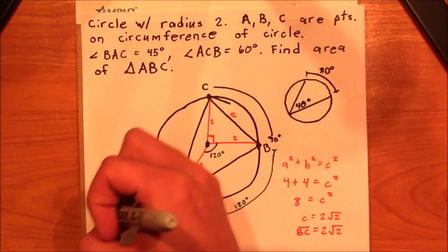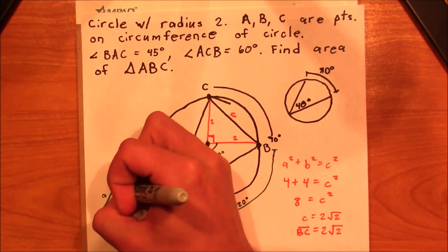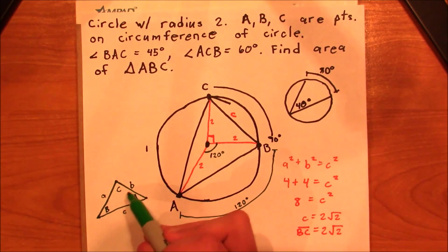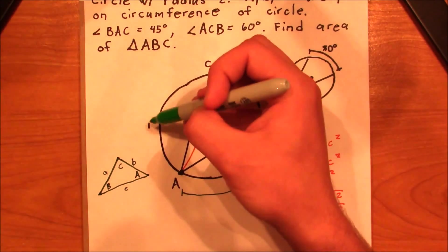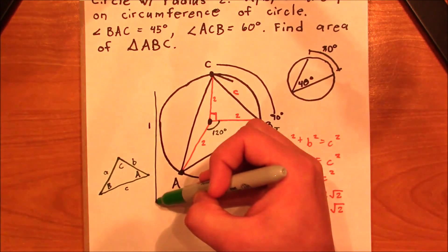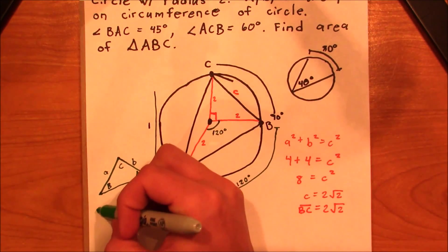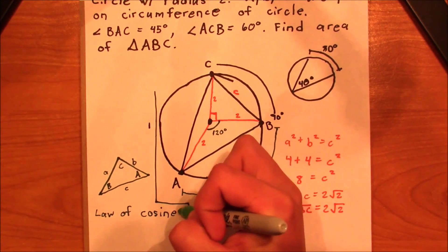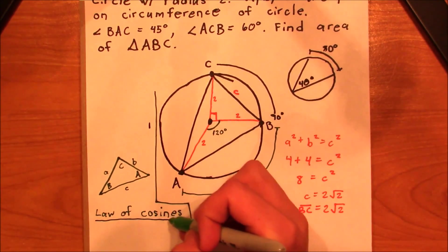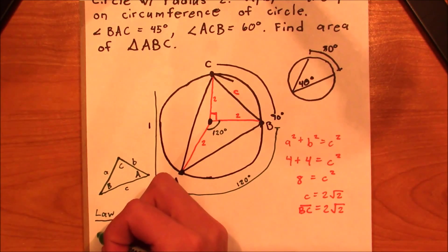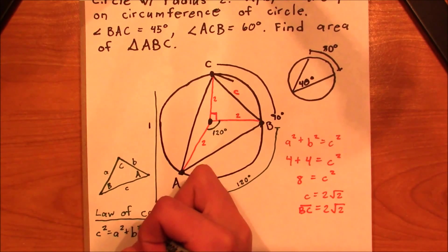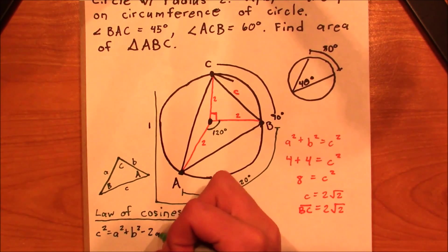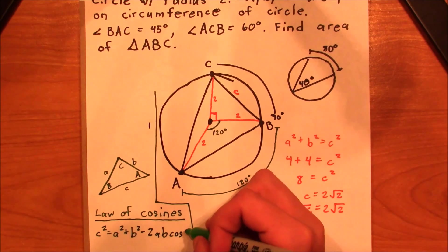And notice that the angles are opposite of their side. For any triangle that looks like this, the law of cosines is this: c squared equals a squared plus b squared minus 2ab cosine c.